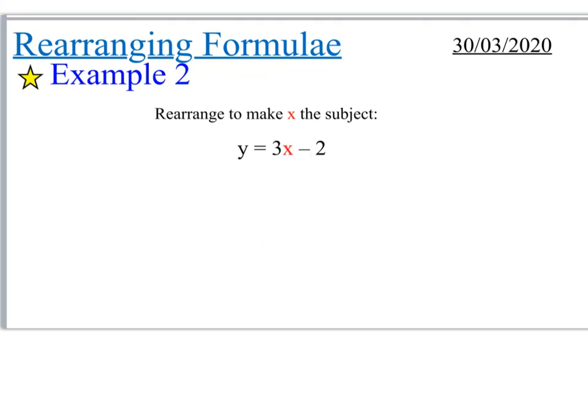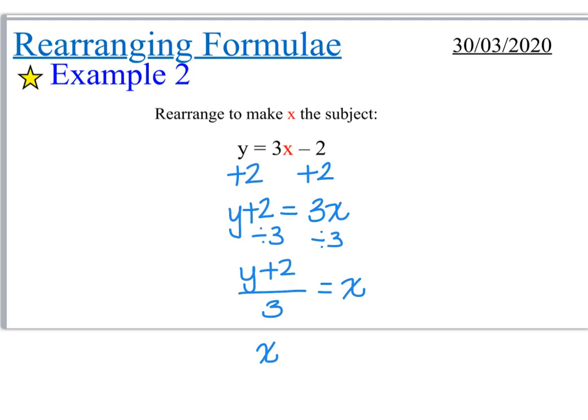Pretty much the same idea in this one. Rearrange to make x the subject. So we've got y is equal to 3x minus 2. So the first thing that we're going to do is do plus 2 and plus 2. So you end up with y plus 2 is equal to 3x. And then we're going to have to get rid of that 3. So we divide both sides by 3. Remember, you have to divide the entirety of y plus 2. So you have y plus 2 all divided by 3 is equal to x. And if you feel like it, you can start with the x. x is equal to y plus 2 all divided by 3.